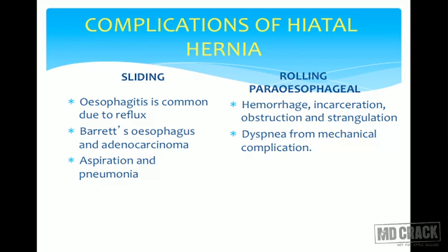Aspiration and complications like pneumonitis are common in sliding hernia because stomach contents may regurgitate back into the esophagus. Dyspnea as a mechanical complication is common in paraesophageal or rolling type of hernia because of compression of the lung by the herniated stomach, colon, or small bowel lying in the mediastinum alongside the esophagus.